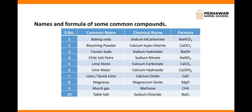To summarize: in a compound, the combination is a chemical combination and the ratio is fixed. A compound is made from elements, and the properties of the elements will not be present in the compound — they lose their parental properties. These are some examples of compounds.